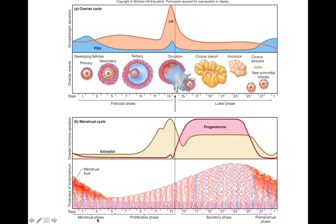There are several phases to the uterine cycle. You can see the menstrual phase, when menstruation or a woman's period occurs. Then the proliferative phase, where a lot of growth happens. And then the secretory phase, with continued growth, very good vasculature, good blood vessels, and increased secretion of the endometrium. Three main phases: menstrual, proliferative, and secretory.